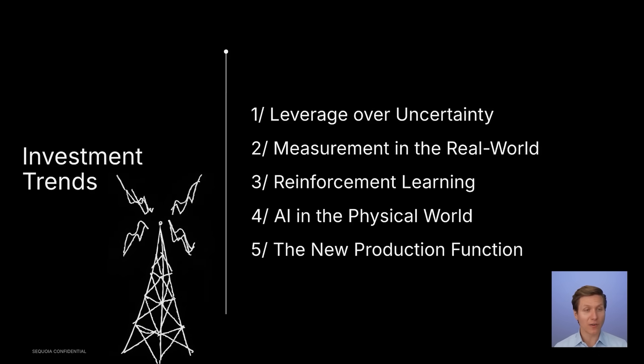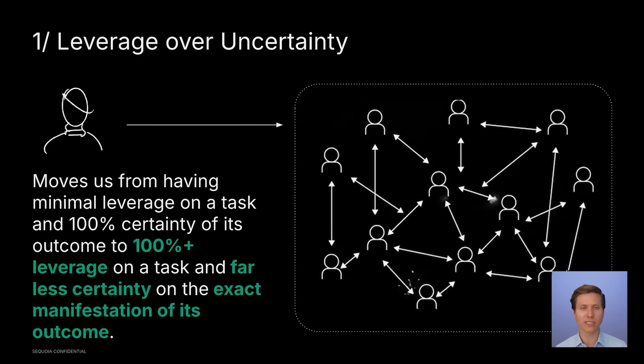Next, let's talk about five investment trends that we're noticing right in the here and now of the artificial intelligence cognitive revolution. The first is leverage over uncertainty. We've noticed that work is moving from us having minimal leverage on a task and 100% certainty of the outcome to 100% leverage on the task and way less certainty on the exact manifestation of the outcome.